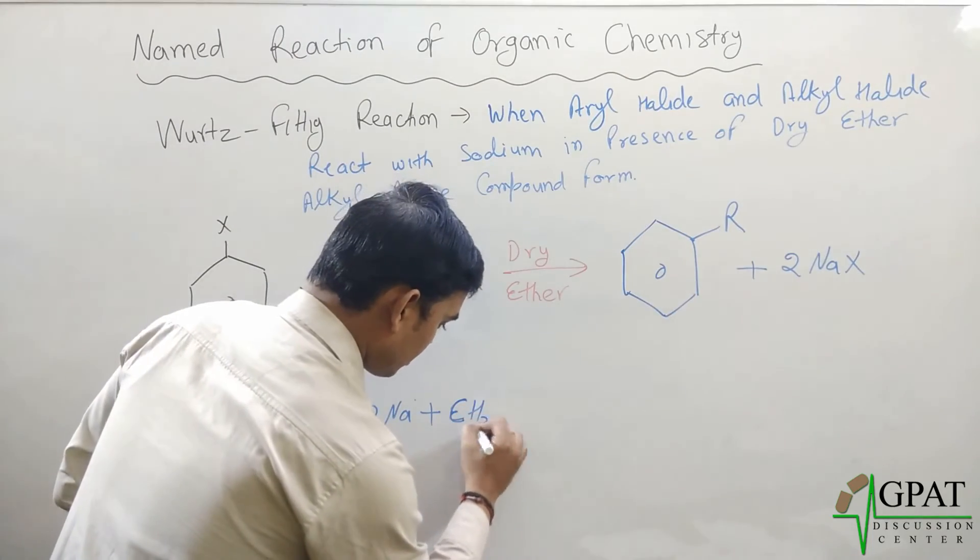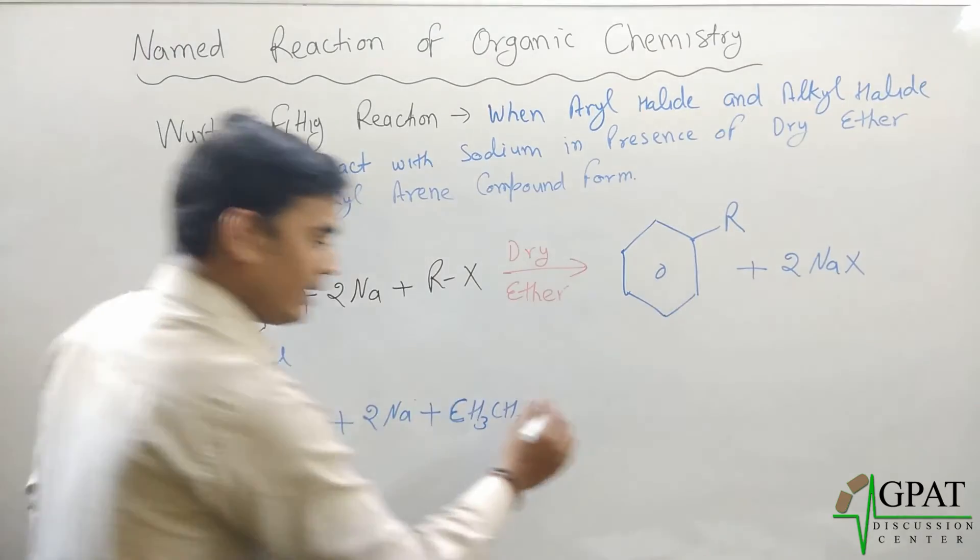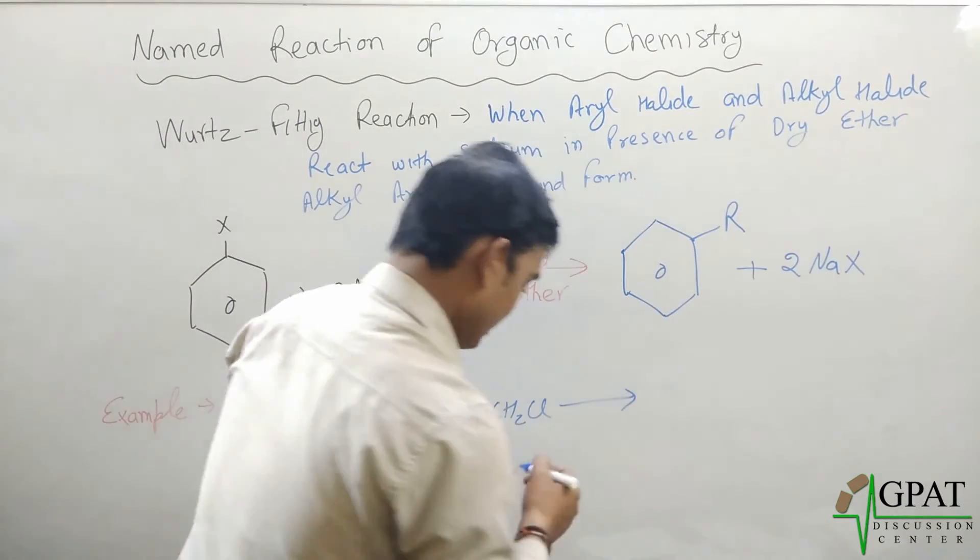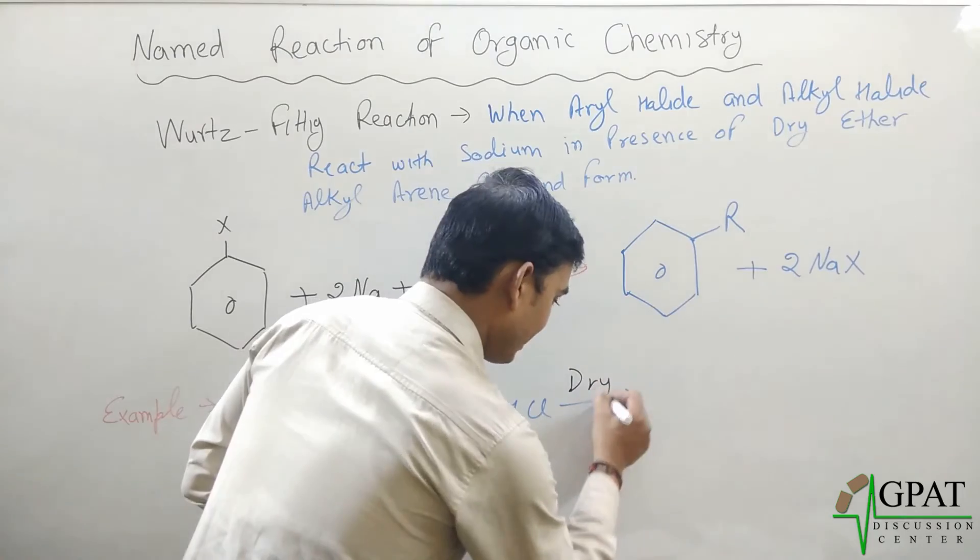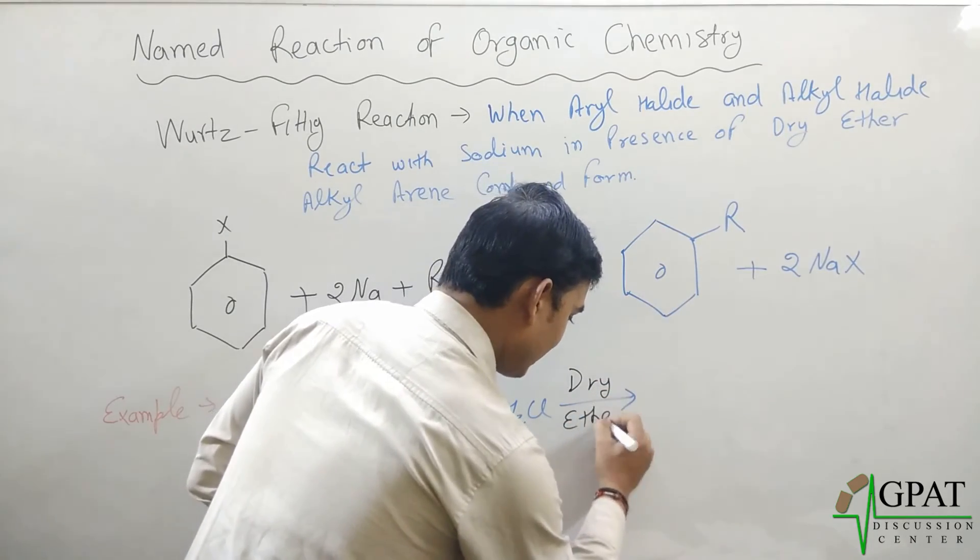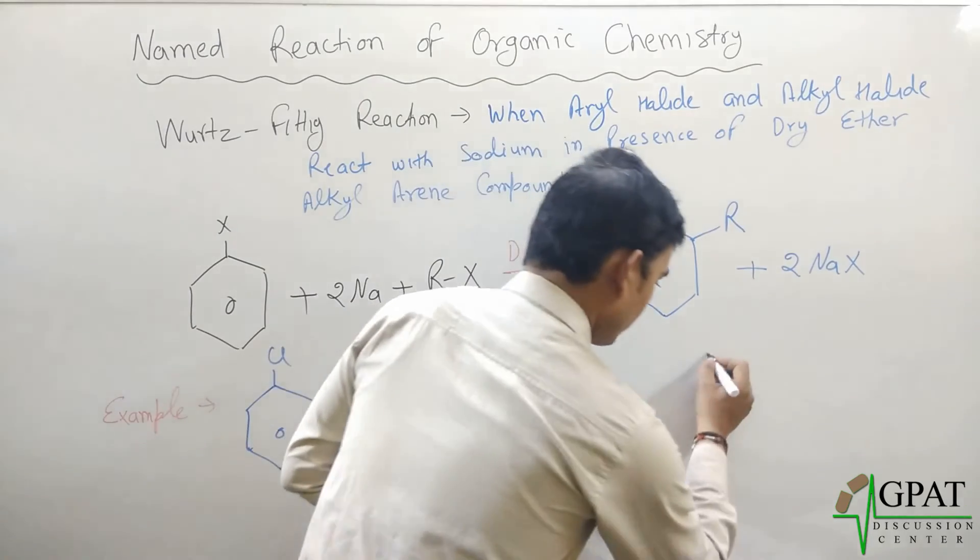CH3, CH2, chlorine means ethyl chloride. Then, this reaction will take place in the presence of dry ether that acts as a catalyst. And in the presence of dry ether, what will be the result product? Result product will be,